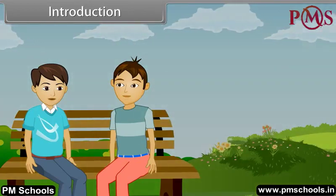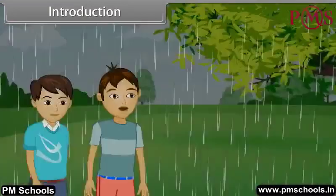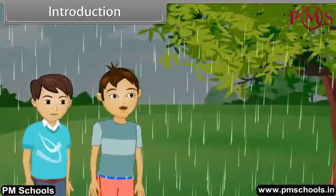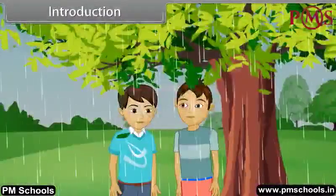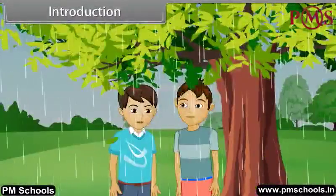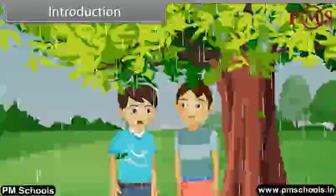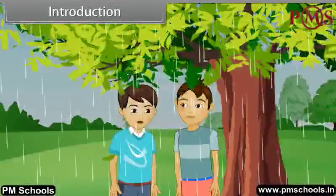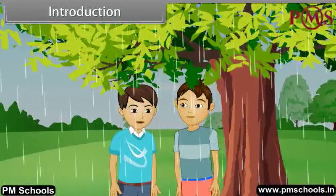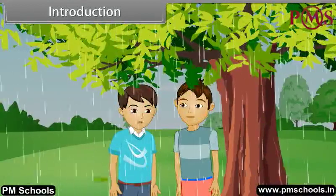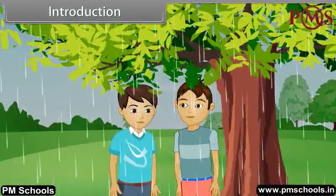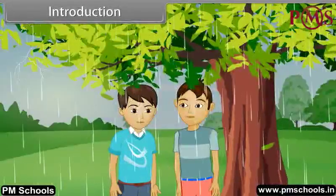Yes, you are right. Oh, rain has started. Brother, can I ask you something? Sure. As we know that clouds are in the sky and raindrops fall from the clouds, why do raindrops always fall downward to earth? Why do they not go upwards?